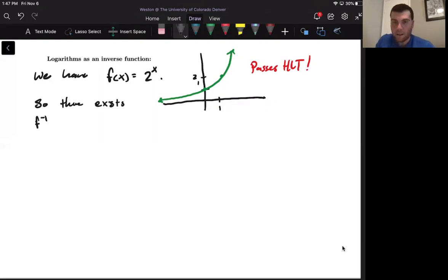For the time being, we're going to call it f inverse of x, where when we compose the two, f of f inverse of x equals just x. And now we're going to give this inverse function a name. We're going to call f inverse of x log base 2 of x. And this is the logarithm of x with base 2.